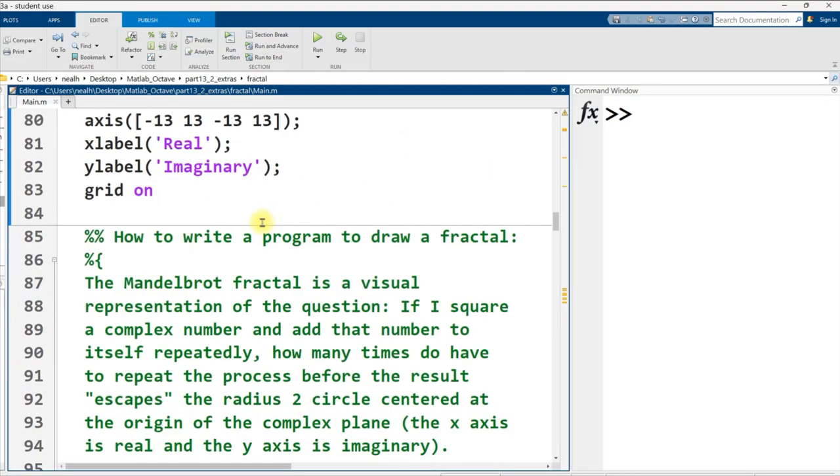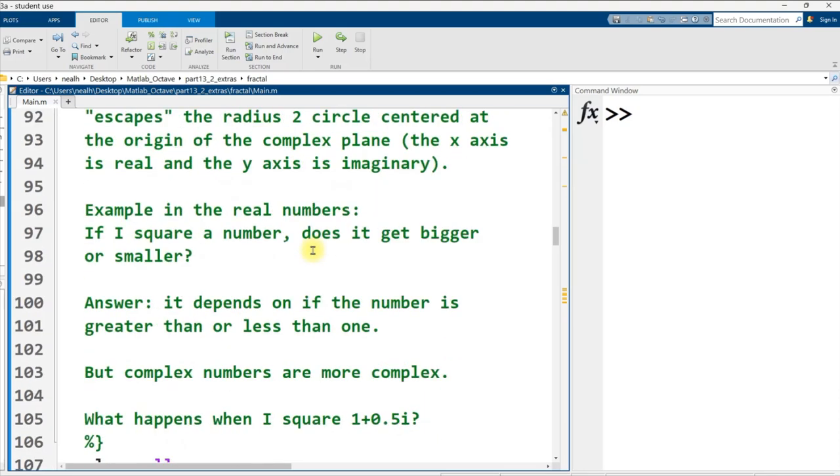All right, finally we're going to get into the fractal itself. We're going to be looking at the Mandelbrot fractal. This fractal is a visual representation of the following question: If I square a complex number and add that resulting number to the original complex number repeatedly, how many times do I have to repeat that process before the result escapes the radius 2 circle centered at the origin? That's a bit much to digest, so let's take it apart in pieces.